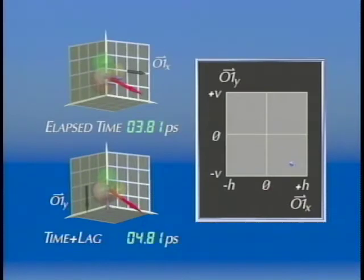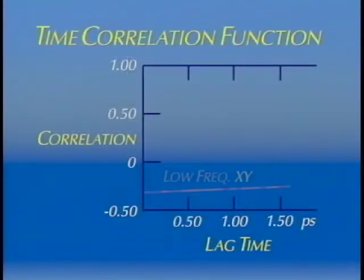The following animations illustrate the time correlation between molecular orientation components induced by the applied laser. Different sequences display the relationship between lag time and the degree of correlation. Each position along the time correlation function plot has its own pattern of motion, representing the extent to which the two orientation components are correlated at any given lag time interval.